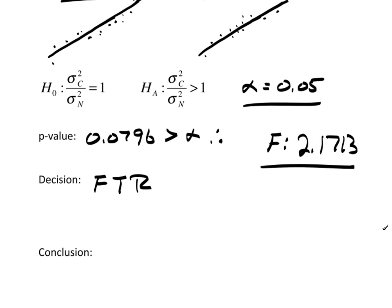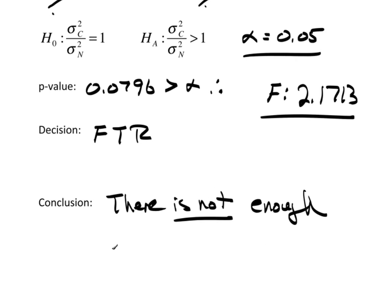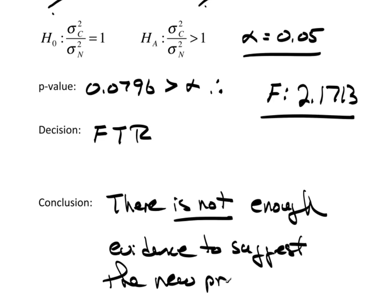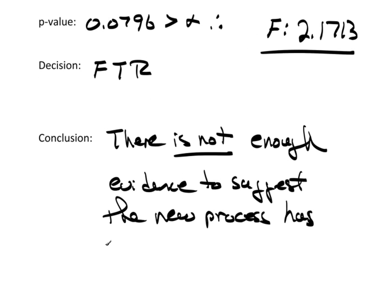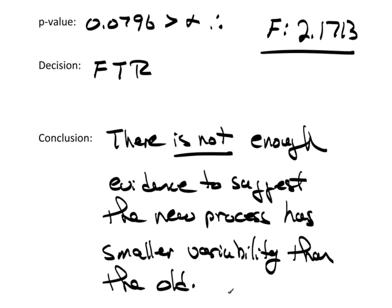Because I failed to reject, my conclusion would be simply, there is not enough evidence to suggest the new process has smaller variability than the current. Okay, so that is an F test and the approach here was as if we were only interested in the variability. And this is extremely important because when we look at the means this is actually one of the steps that we need before we can complete the analysis regarding the means.